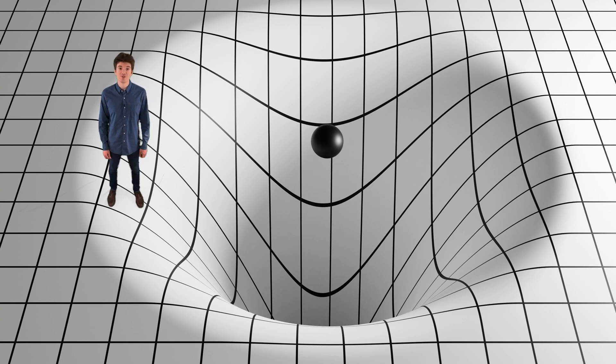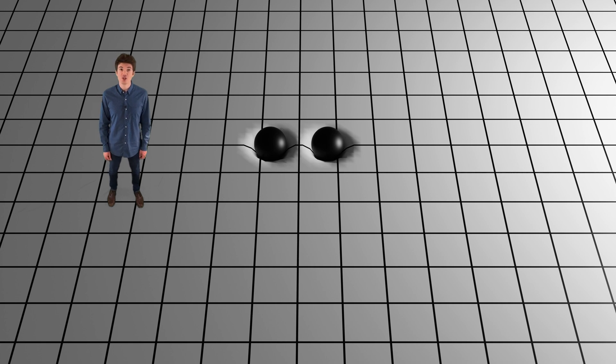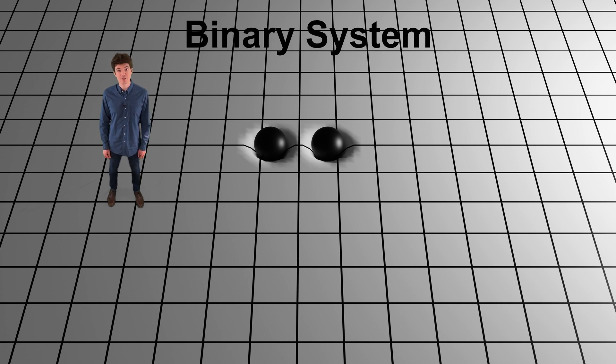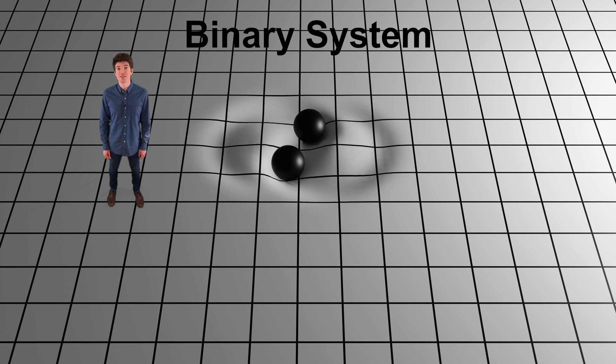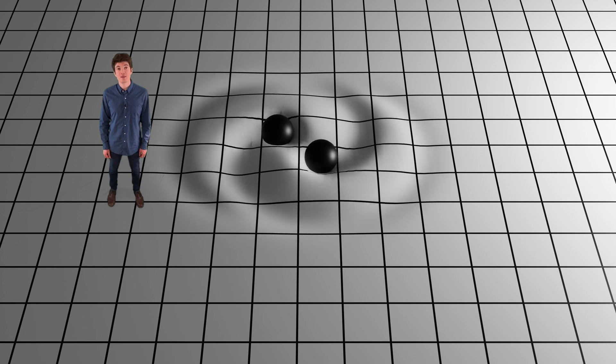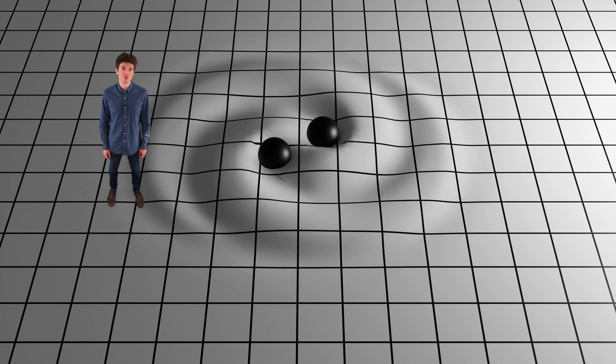This configuration of two massive objects orbiting each other is known as a binary system. And when a binary system of black holes orbits near the speed of information, they produce detectable gravitational waves.